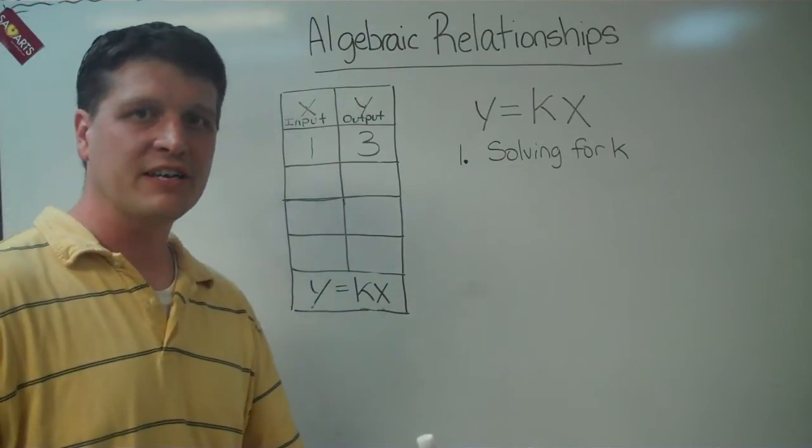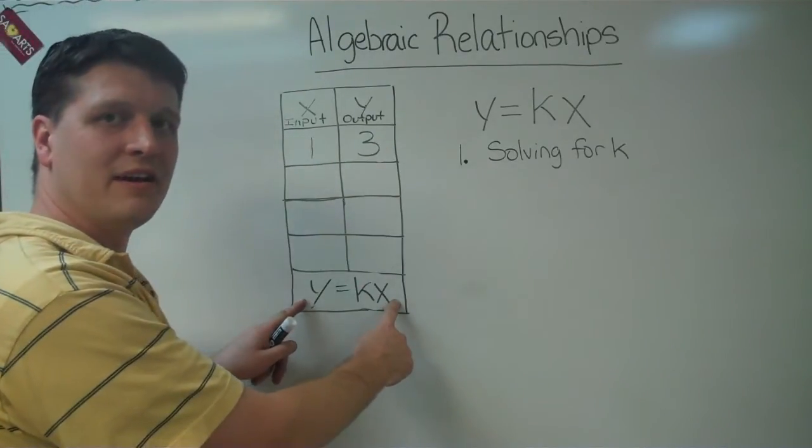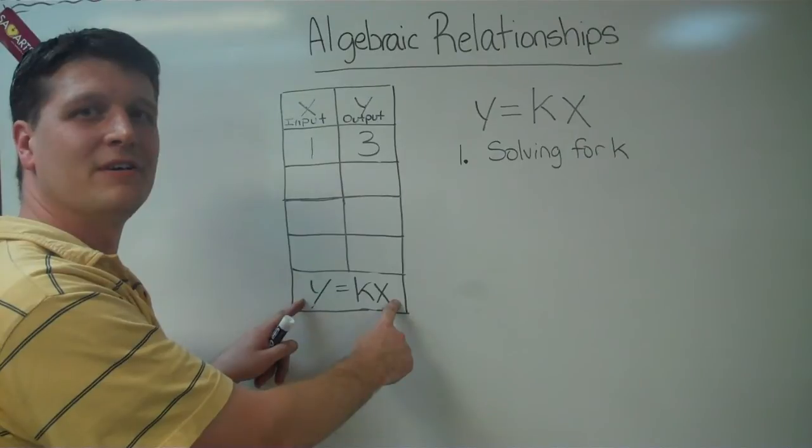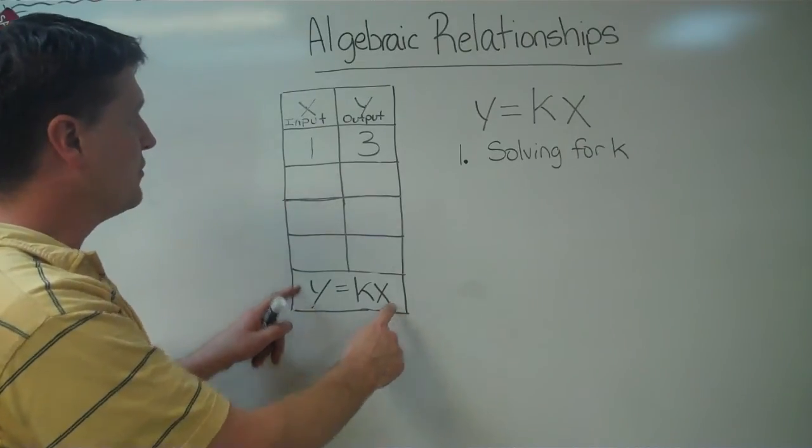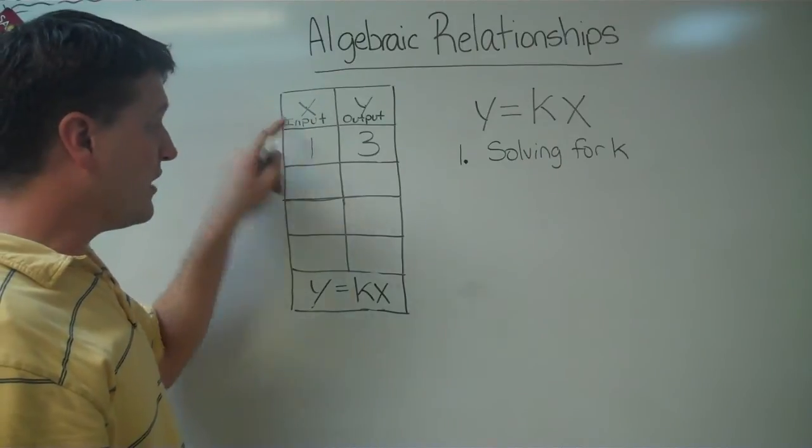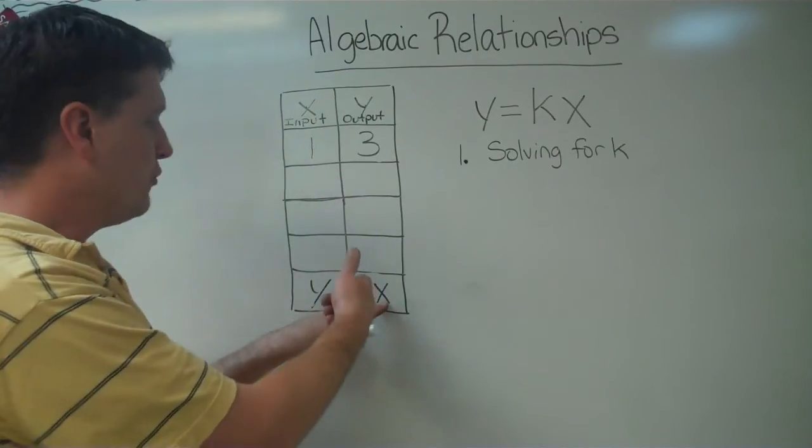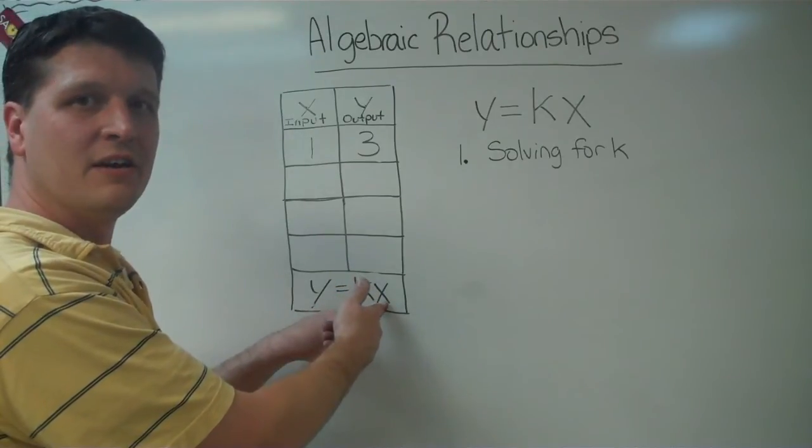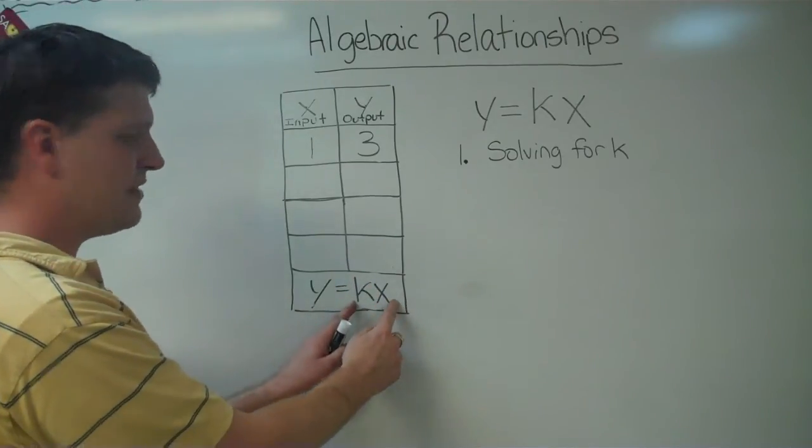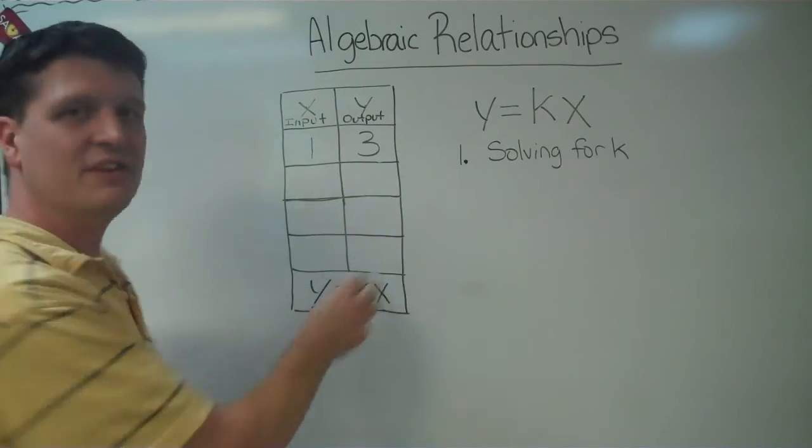In any algebraic table, you'll have a set of data and you'll have a rule at the bottom that you follow. And what you'll do is you'll take your input values, which are your x values, and you'll plug them in or substitute them into your equation. And then you'll solve this side of the equation, and it'll give you what your missing values are over on this side.